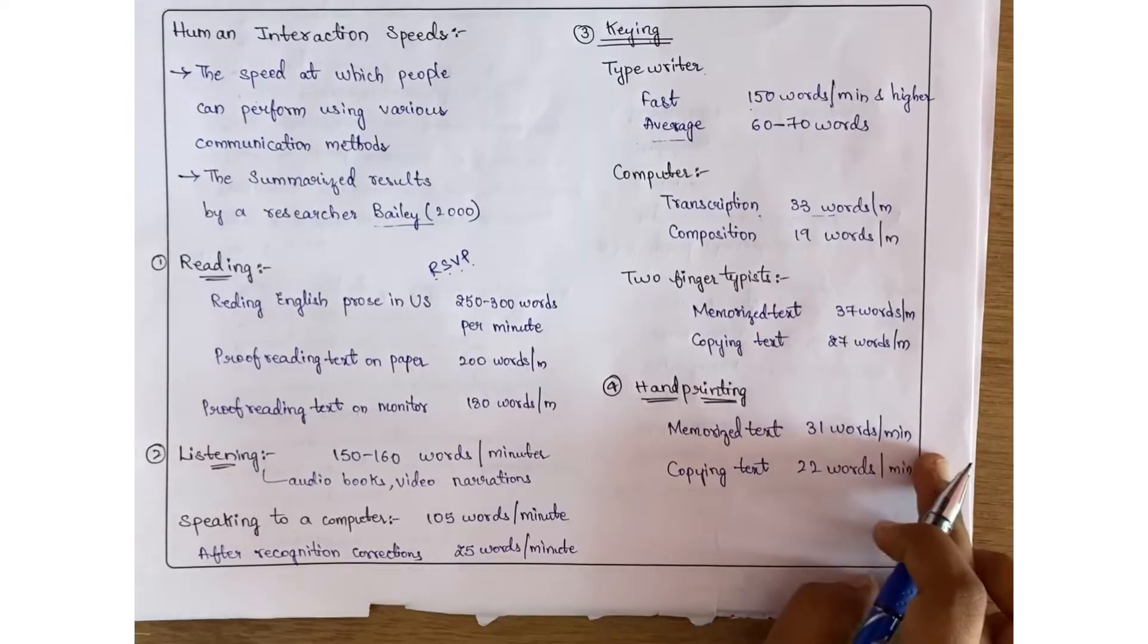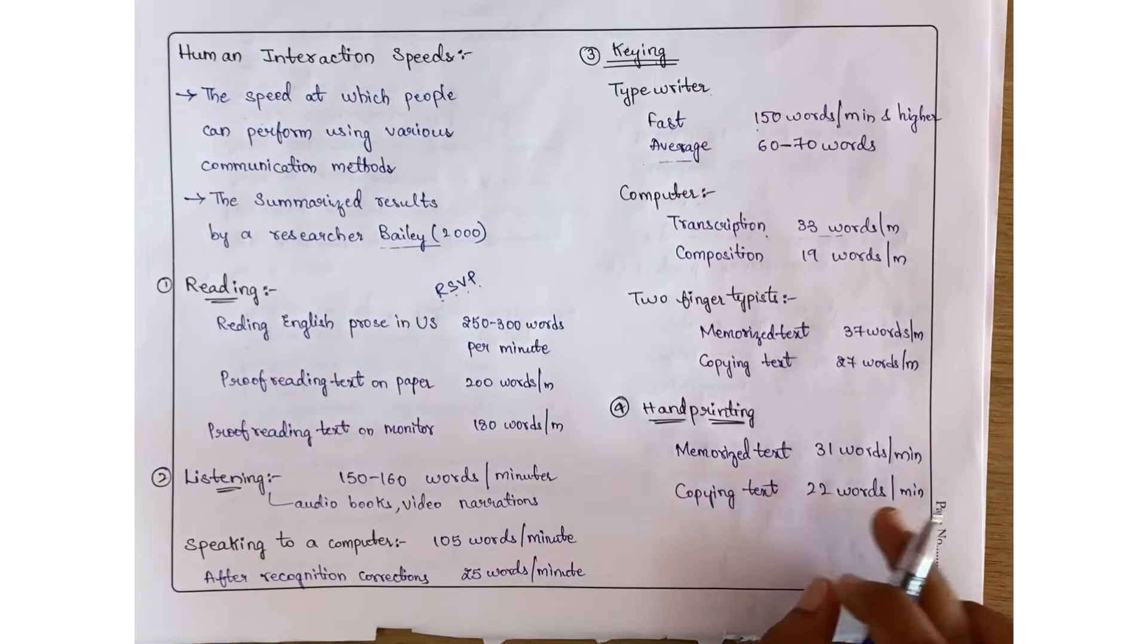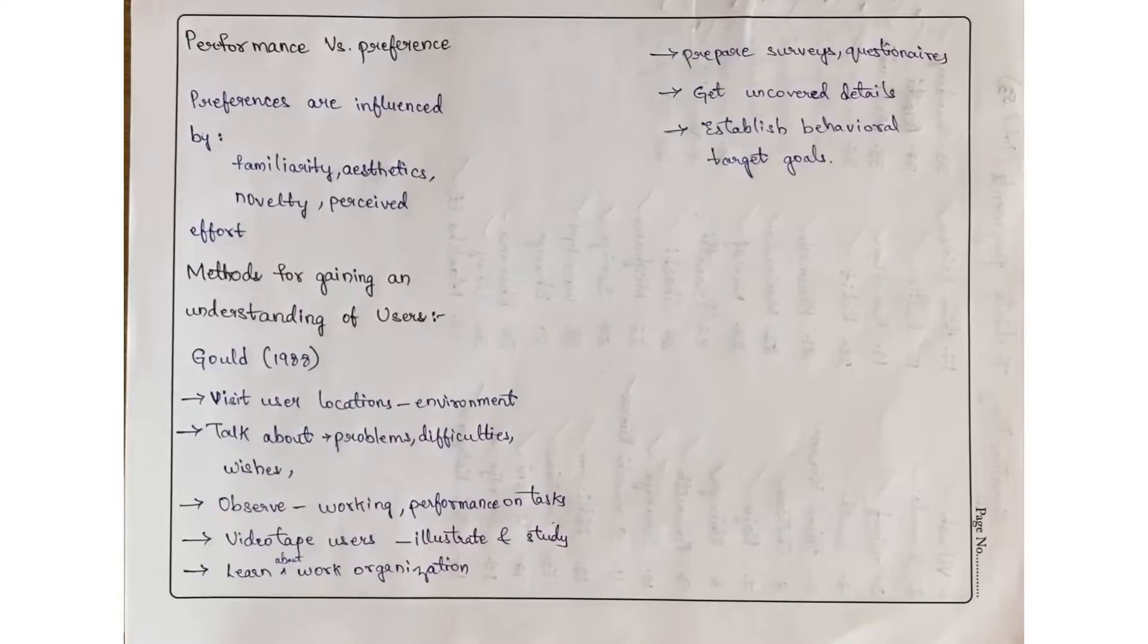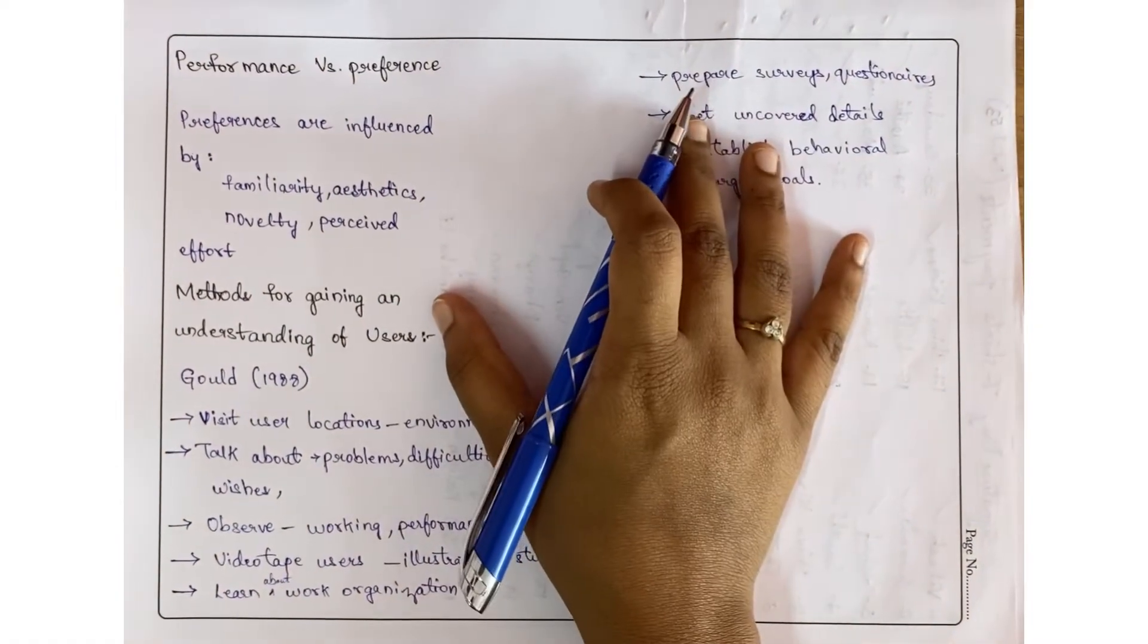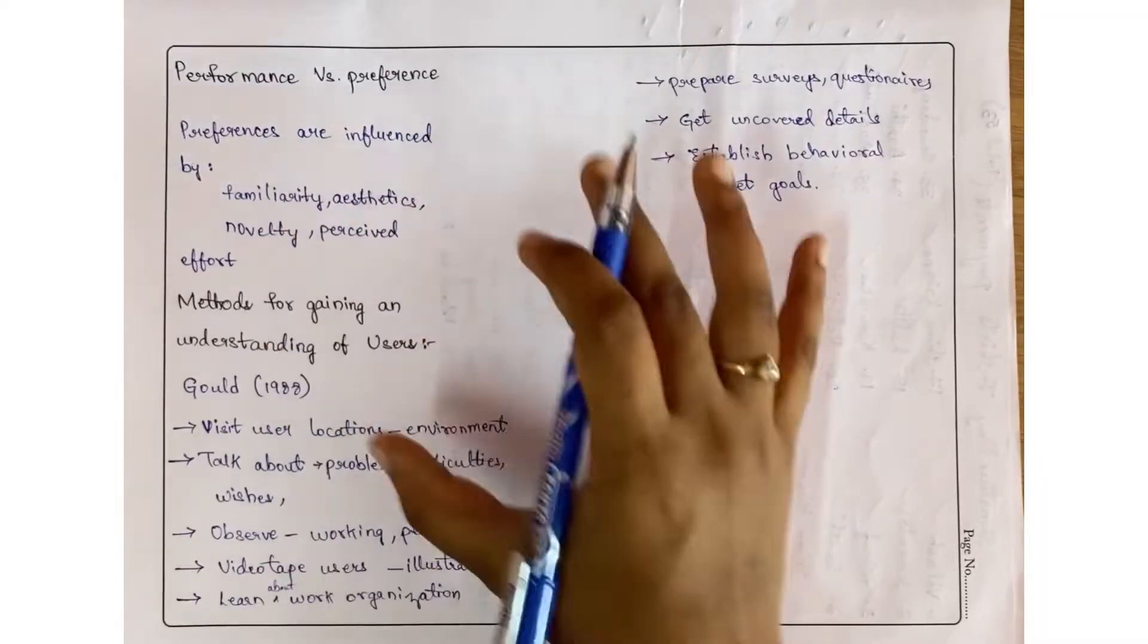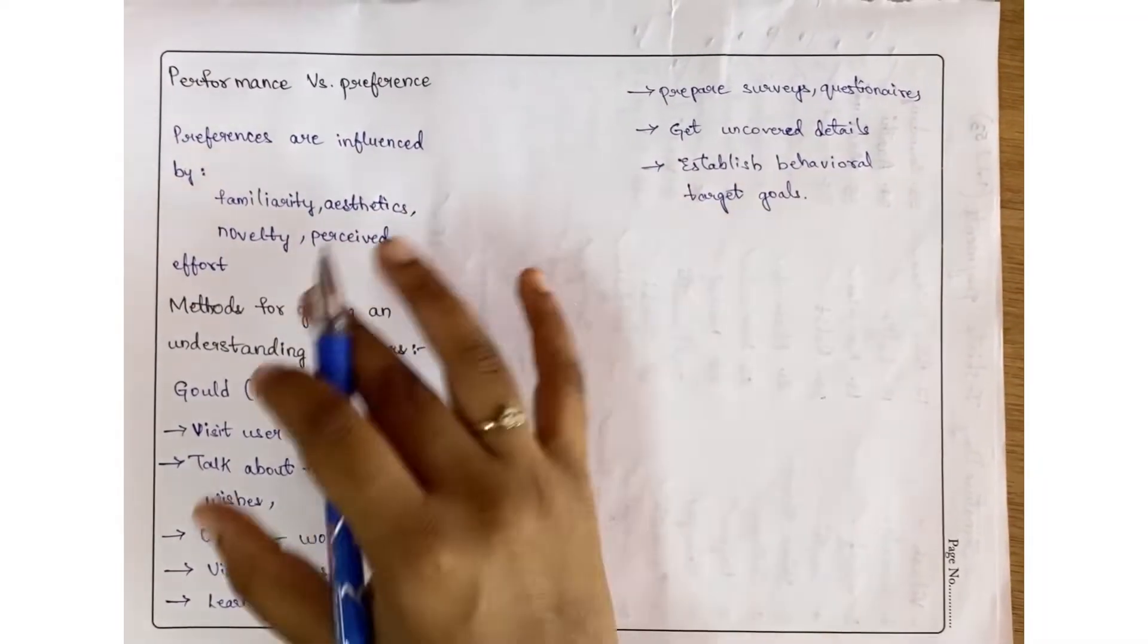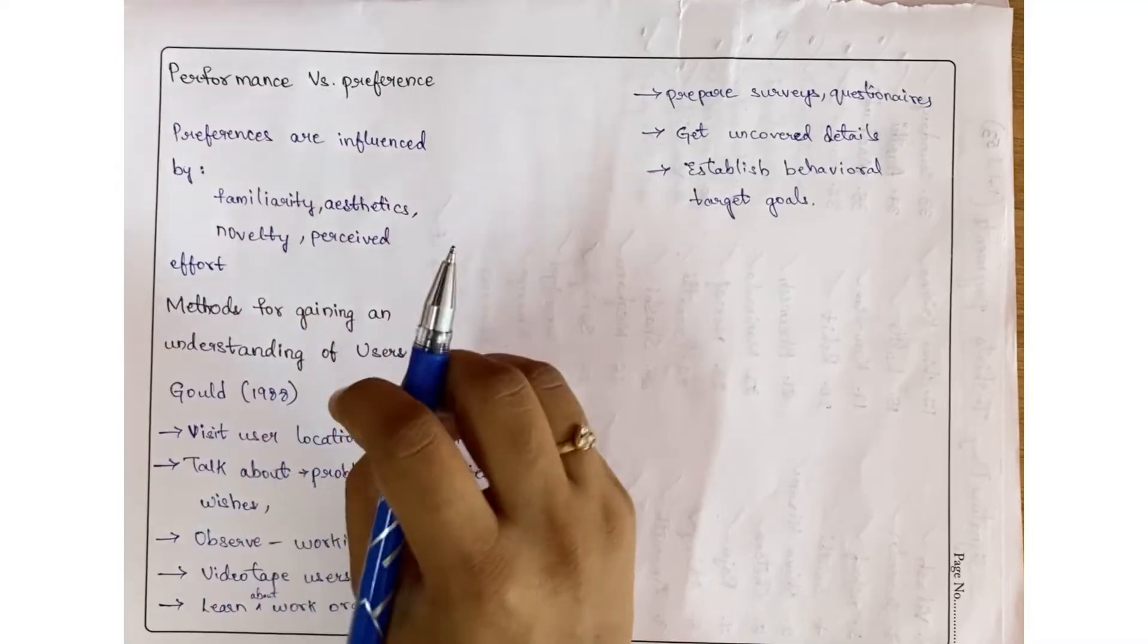For hand printing, memorized text is 31 words per minute and copying text is 22 words per minute. Now coming to performance and preference.